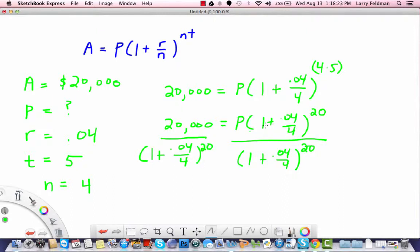When we do that, that cancels with that, and we're left with P. And using a calculator, we get P equals $16,391 roughly.